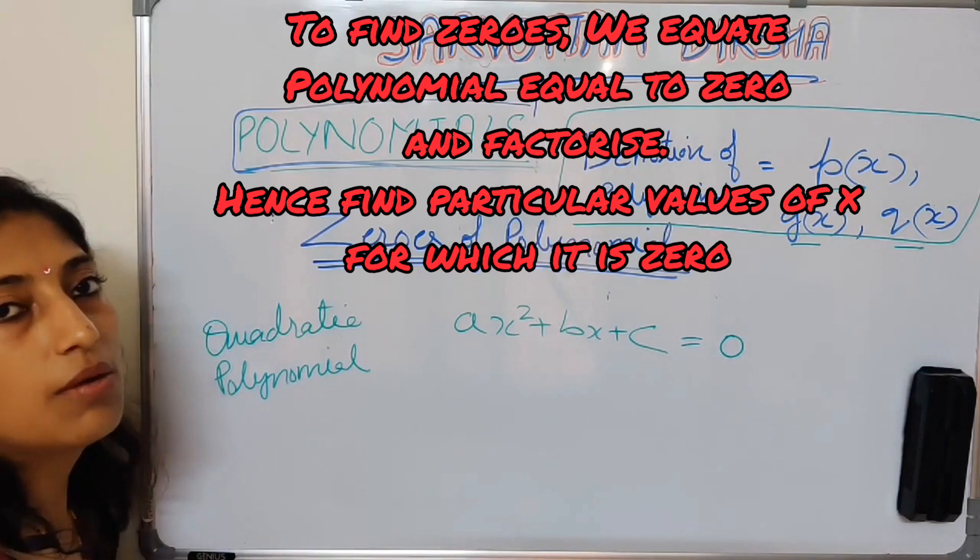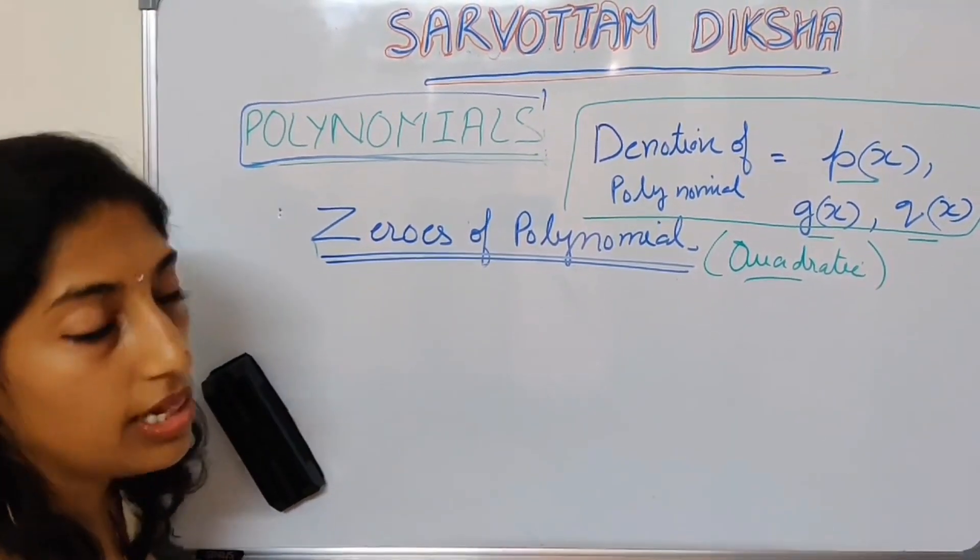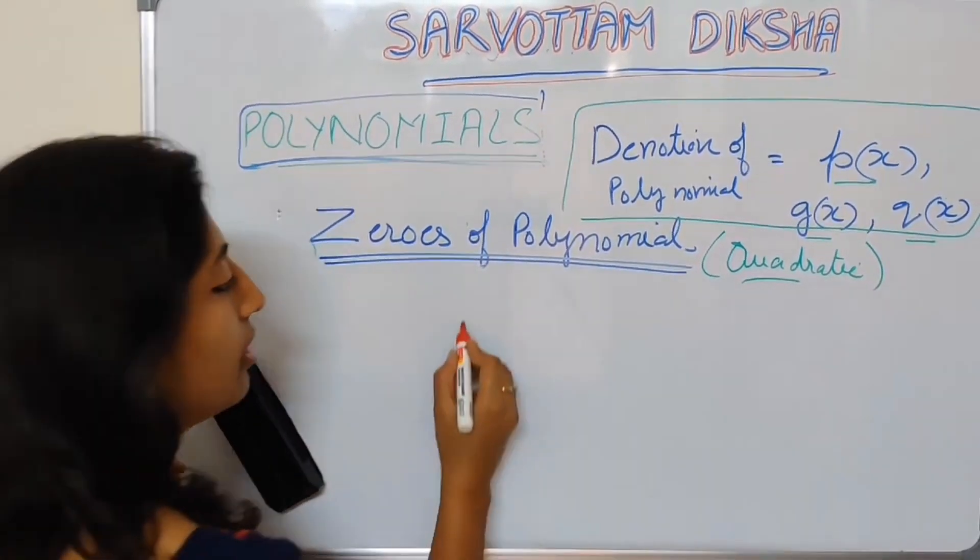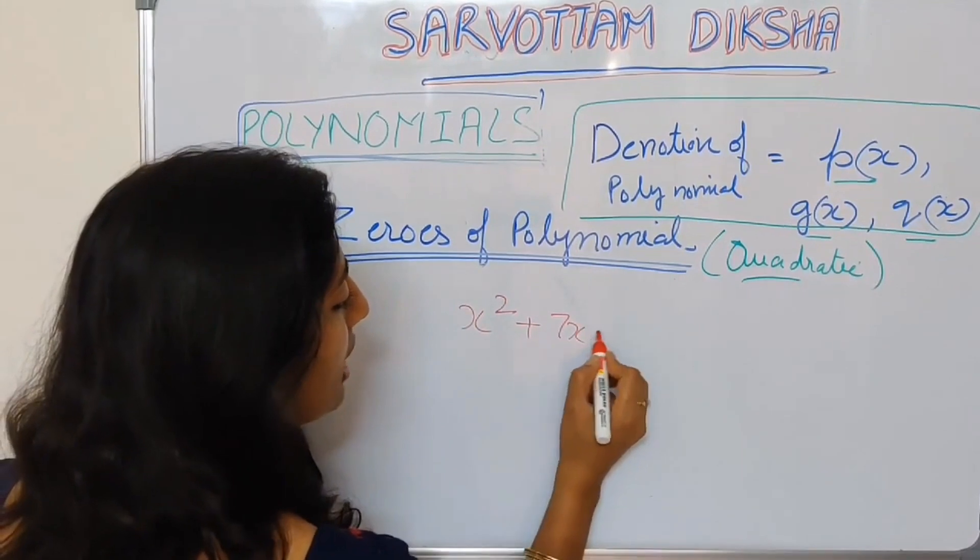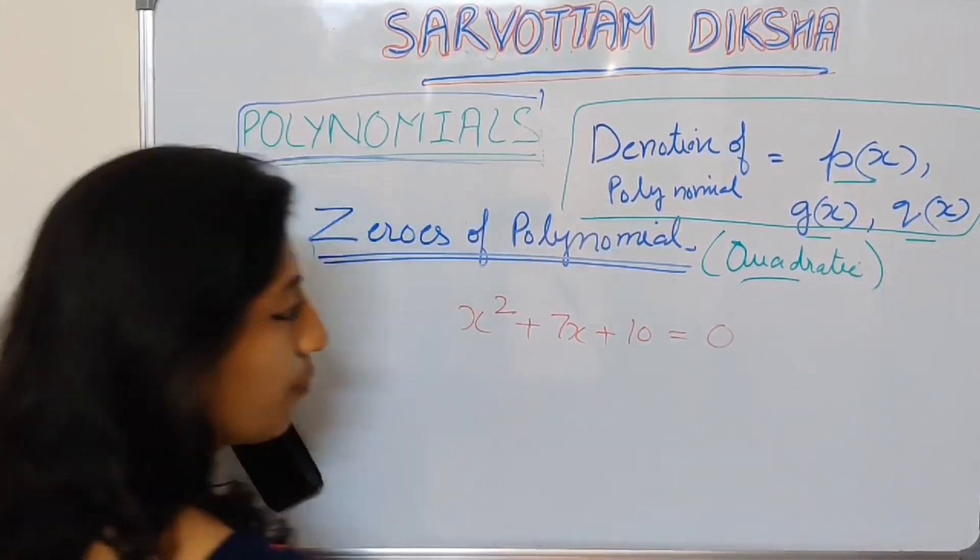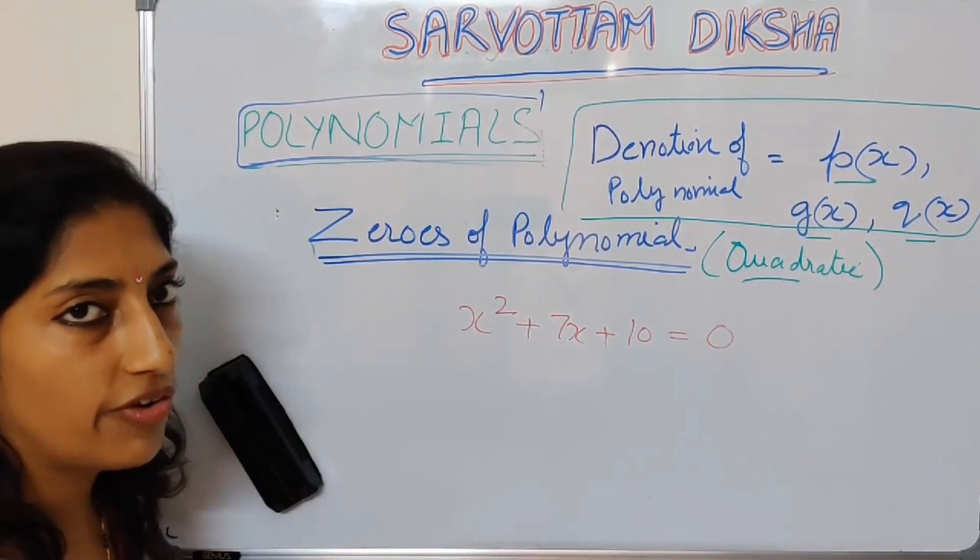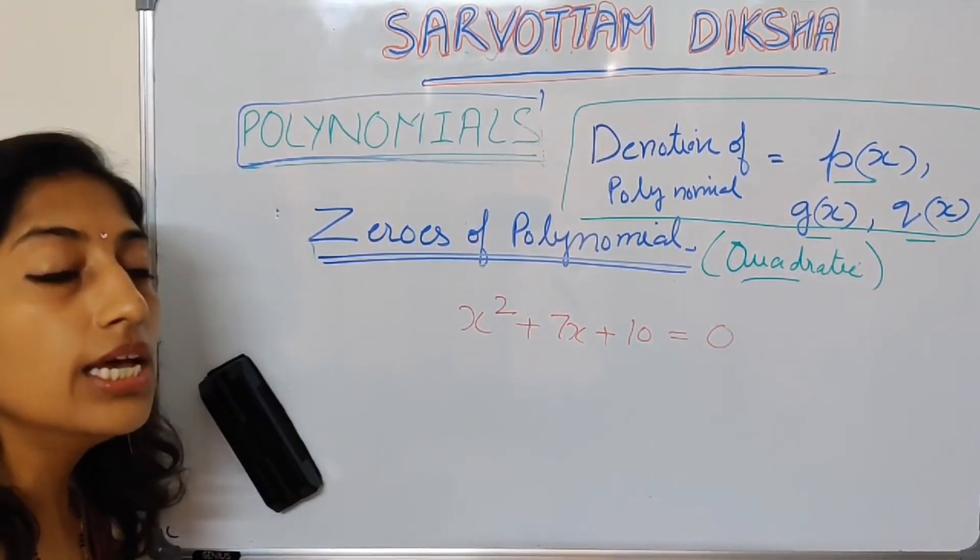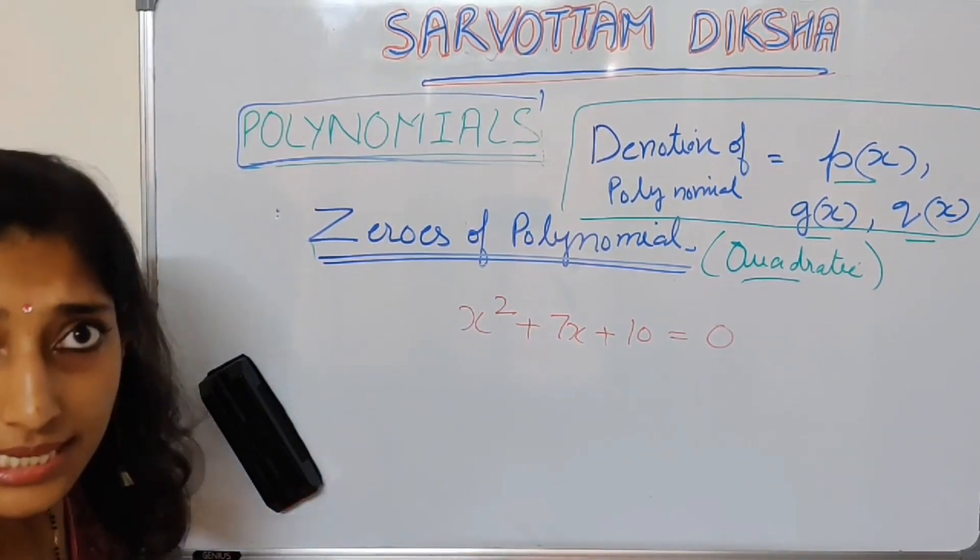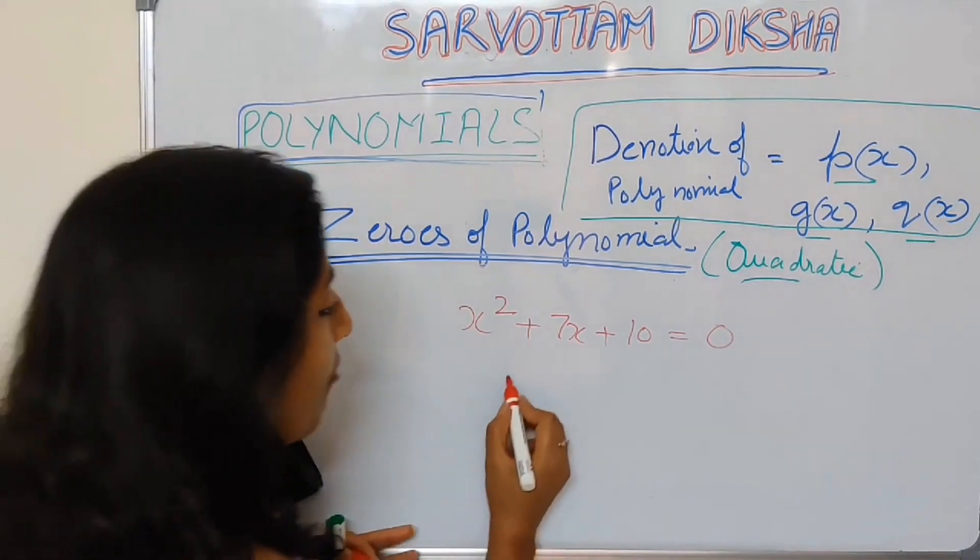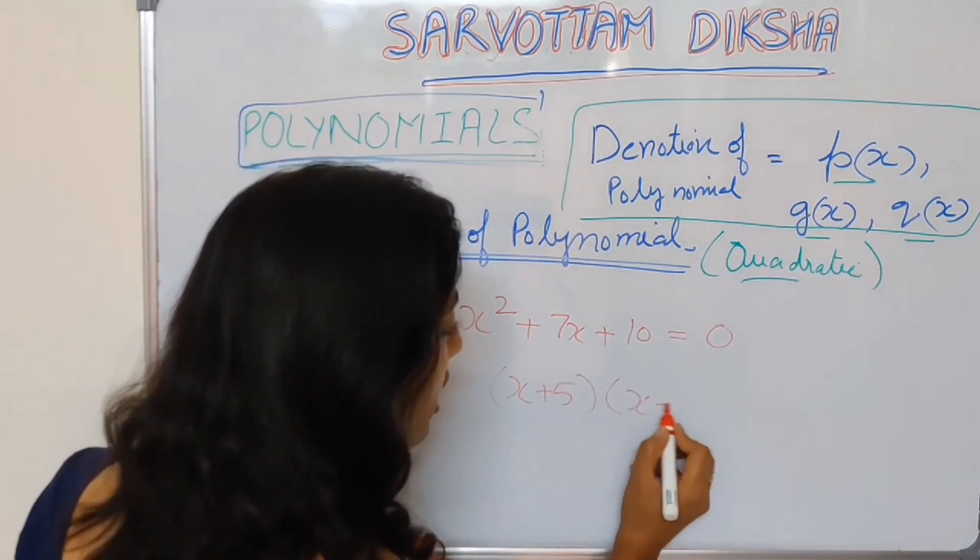I can factorize my quadratic polynomial to understand zeros of a quadratic polynomial. Let me take example of a quadratic expression x square plus 7x plus 10 equals 0. We can factorize this expression. Details of factorization I will discuss in my subsequent video. Here you just understand how things are coming out. After factorization I will get it as (x plus 5)(x plus 2).